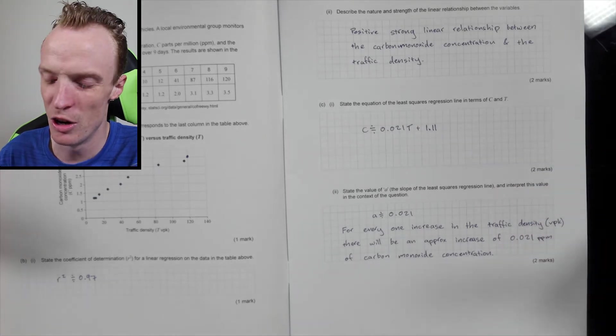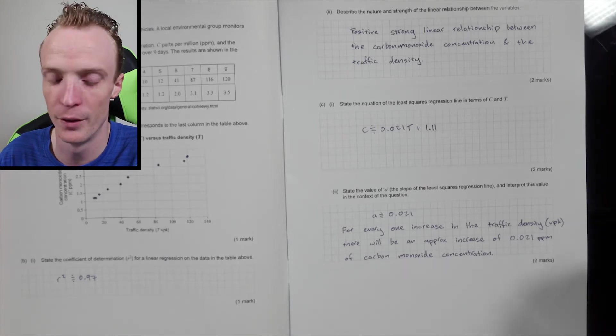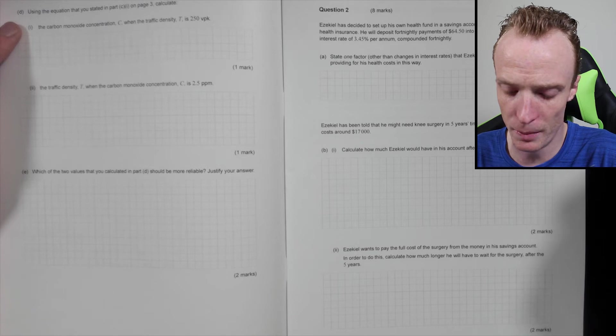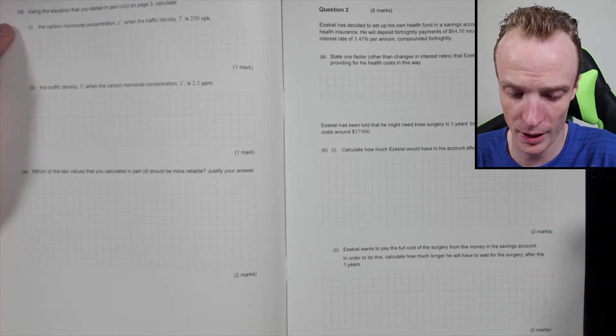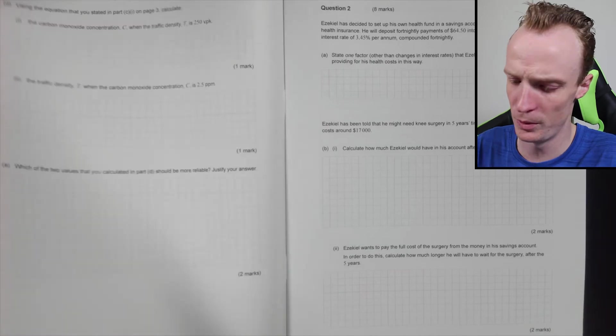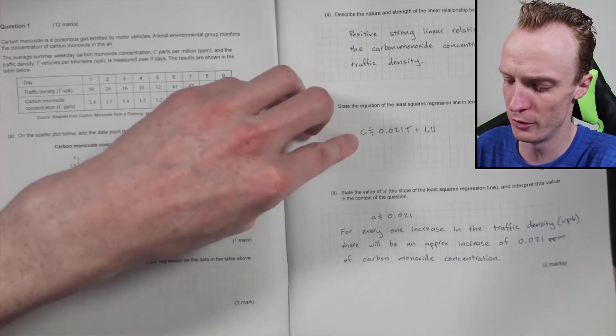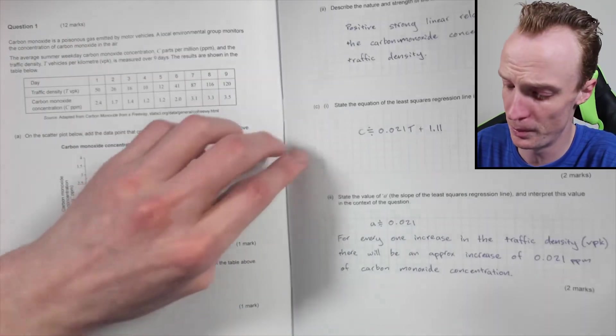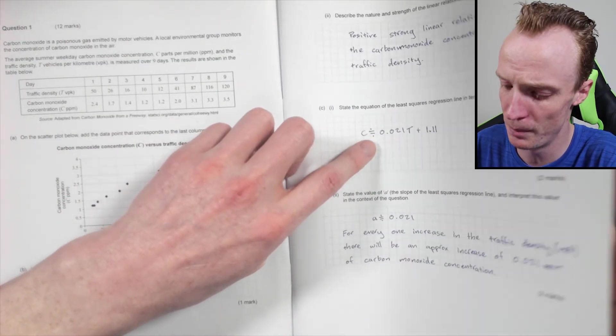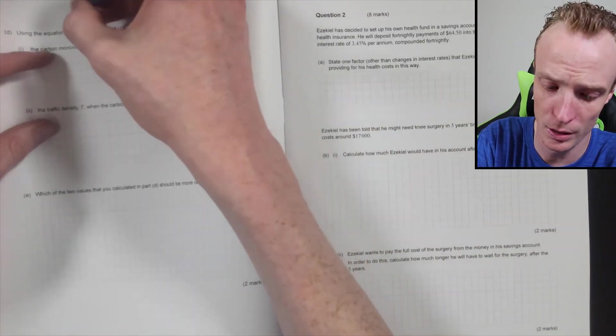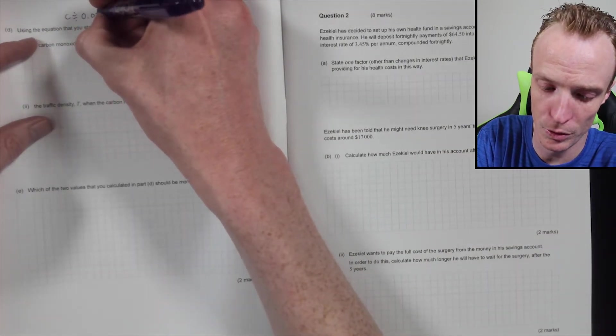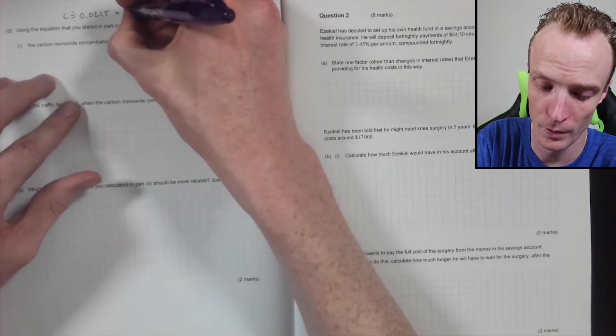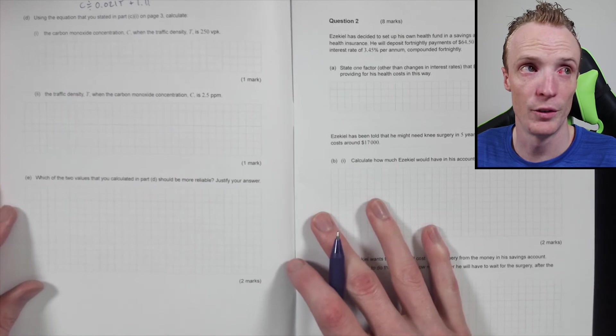So part d: using the equation that you stated in part c(i) on page three, calculate. Now often when I do this sort of stuff, just with the question, I'll bring this equation right up on the top here so I've got it. So c is approximately equal to 0.021t plus 1.11. So now I've got it here just on top that I can refer to.